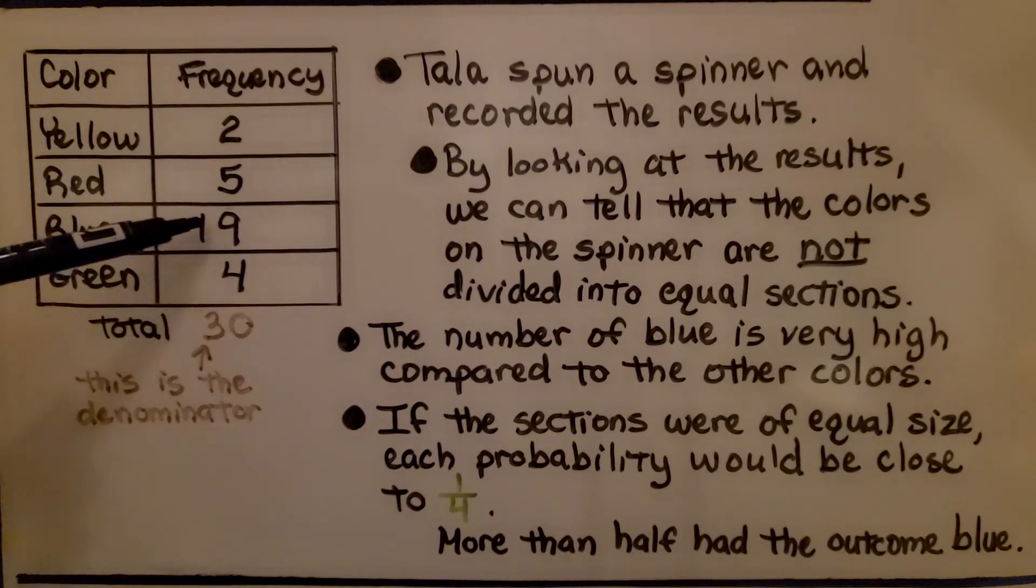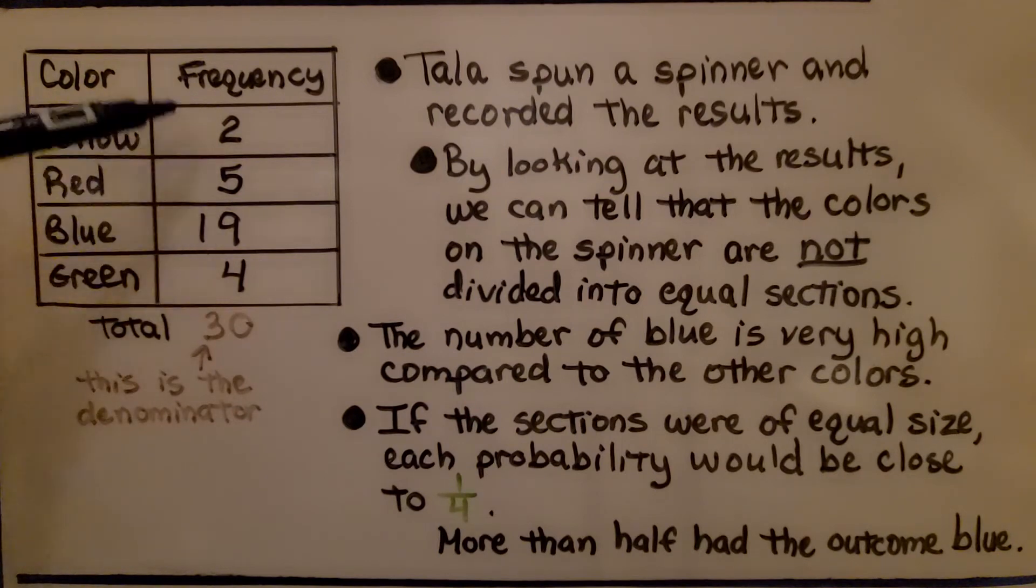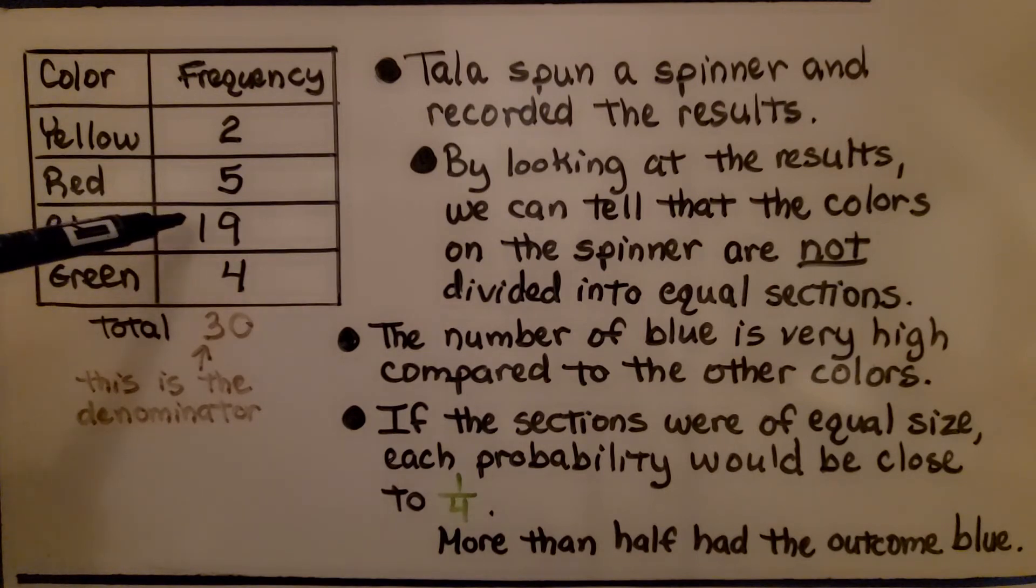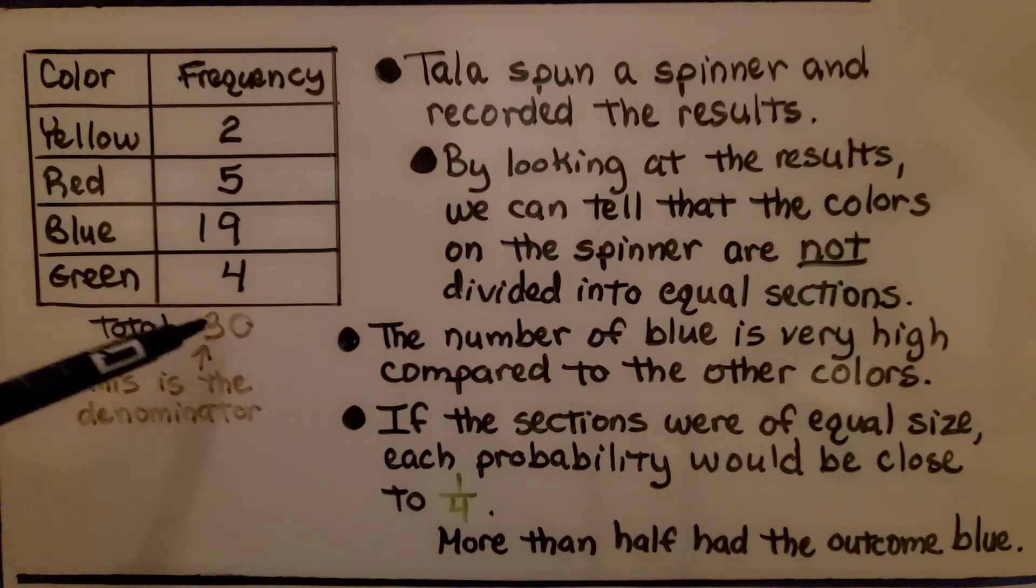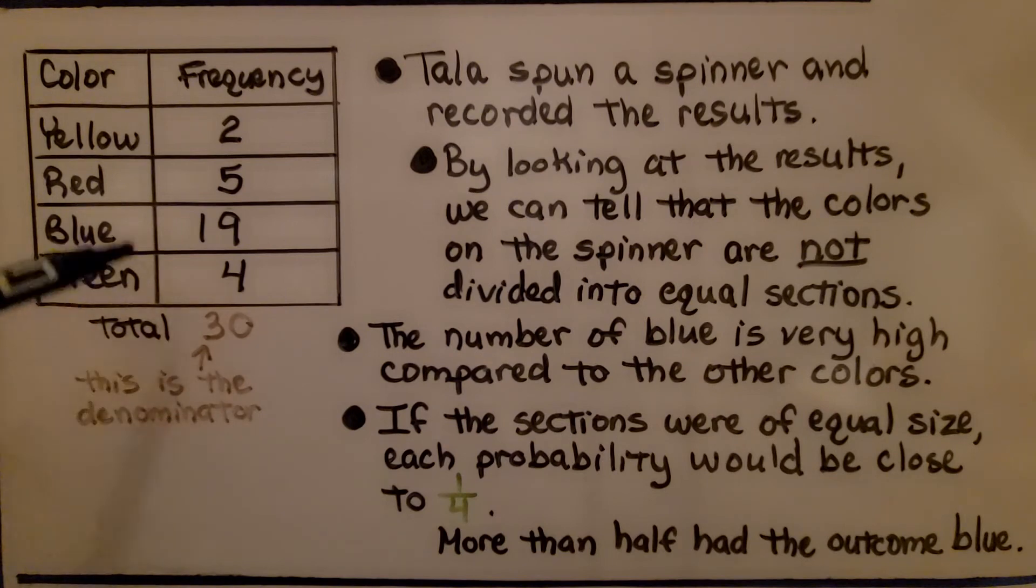Look at this, there's 19 compared to single digits for the other colors, and they're low single digits. If the sections were of equal size, each probability would be close to one-fourth, and more than half had the outcome blue. So this is 19 thirtieths, because remember the total of the trials is the denominator. So 19 of 30 times it was blue. That blue section must be very large.